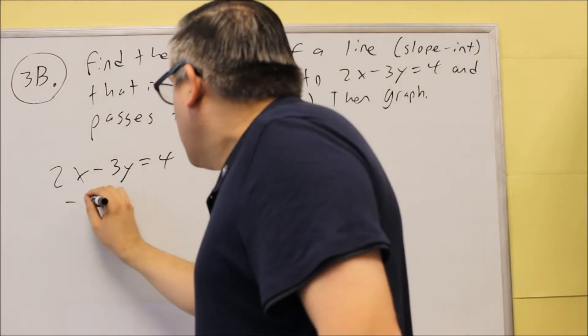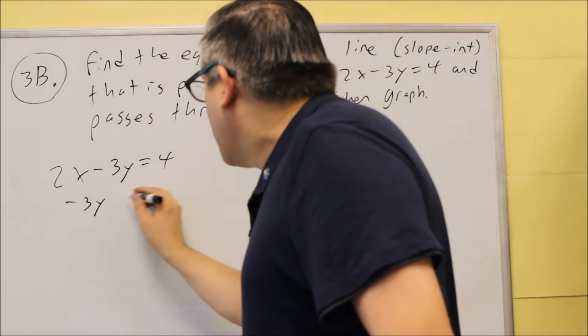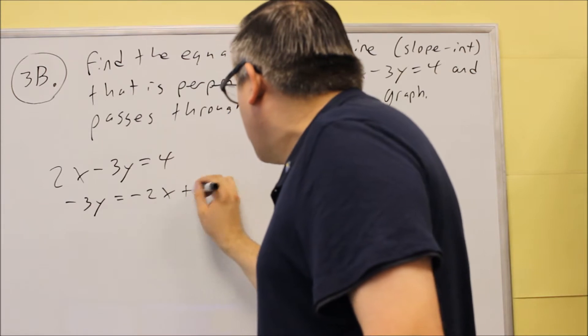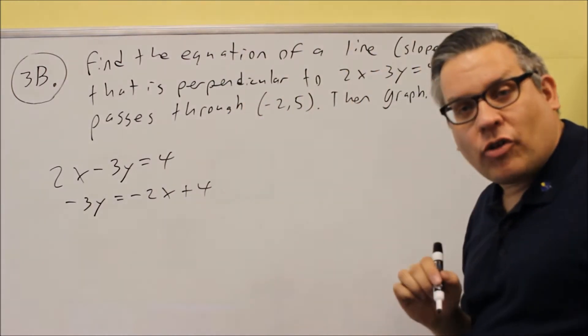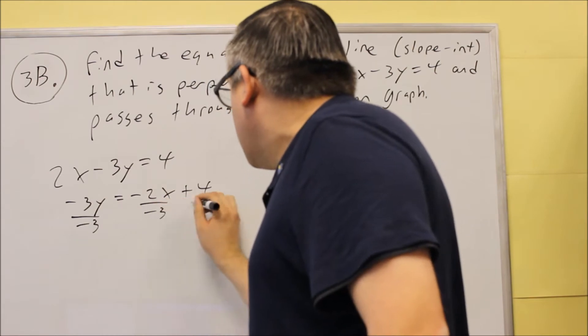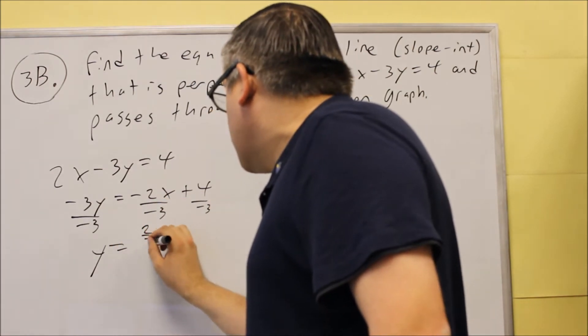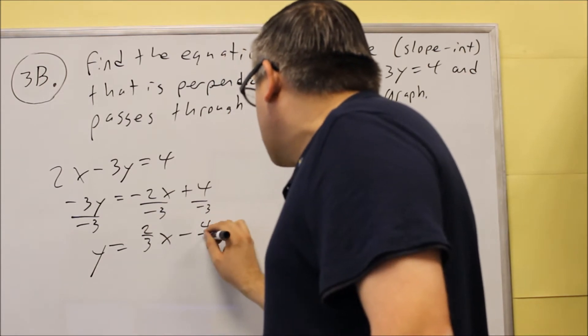Let's solve for this one. We're going to move the 2X over. The negative still stays with the 3 here, with the Y, and you get negative 2X plus 4. You want to solve for Y, which means you want to divide all these by negative 3. We're going to get Y equals 2/3X minus 4/3.